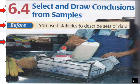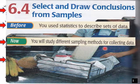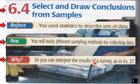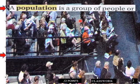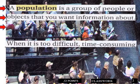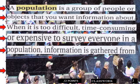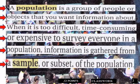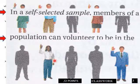Okay, before you use statistics to describe sets of data, you will study different sampling methods for collecting data, so you can interpret the results of a survey. This is all from 6.4, Select and Draw Conclusions. A population is a group of people or objects that you want information about. When it is too difficult, time-consuming, or expensive to survey everyone in a population, information is gathered from a sample of the population.